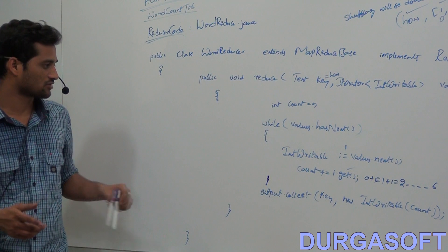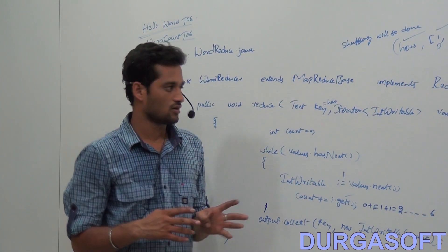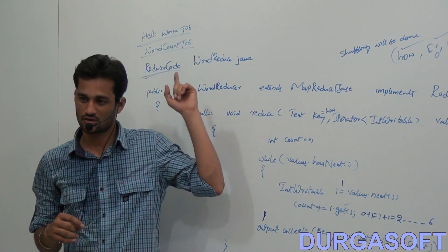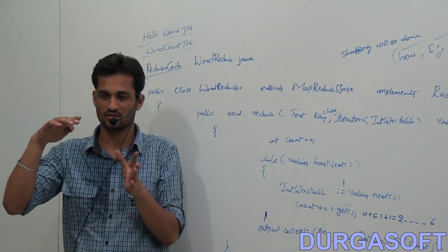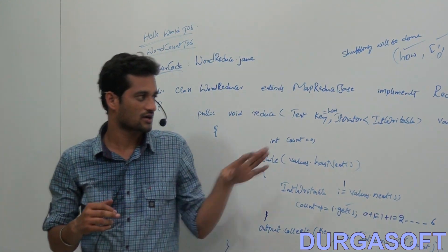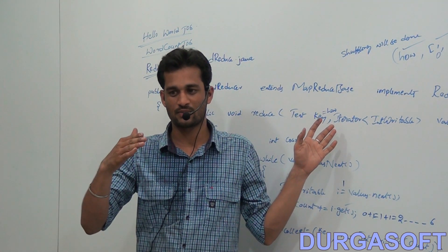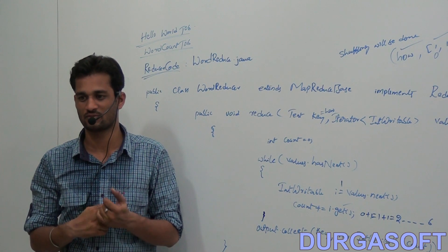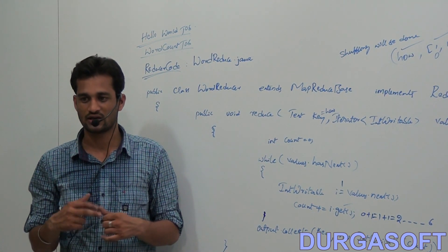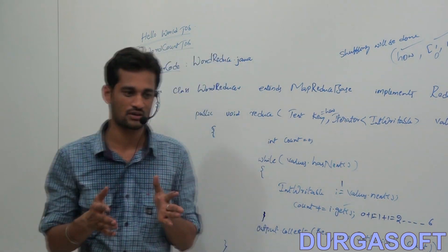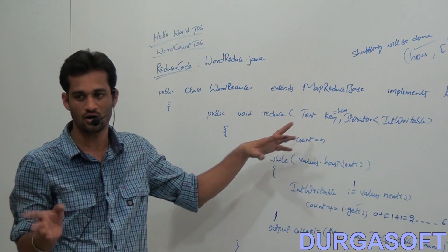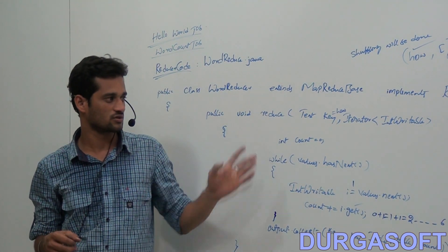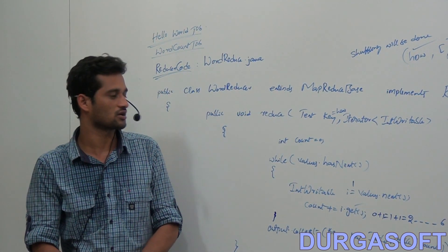One more important thing: the reduce() method will be called depending on the number of shuffled and sorted key-value pairs. Similarly, the map() method will be called depending on the number of key-value pairs generated by the RecordReader. The RecordReader generates key-value pairs depending on the number of lines in the input split — if the input split has 1000 lines, 1000 key-value pairs are generated and the map() function is called 1000 times. At a time, only one key-value pair is passed to the mapper, and similarly only one key-value pair is passed to the reducer. So that's the final reducer code — thank you.